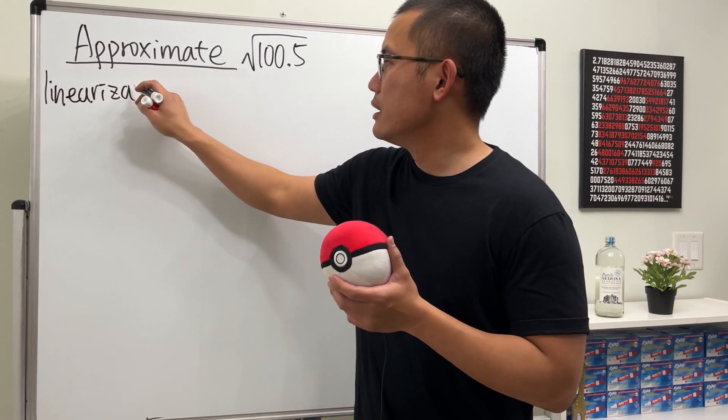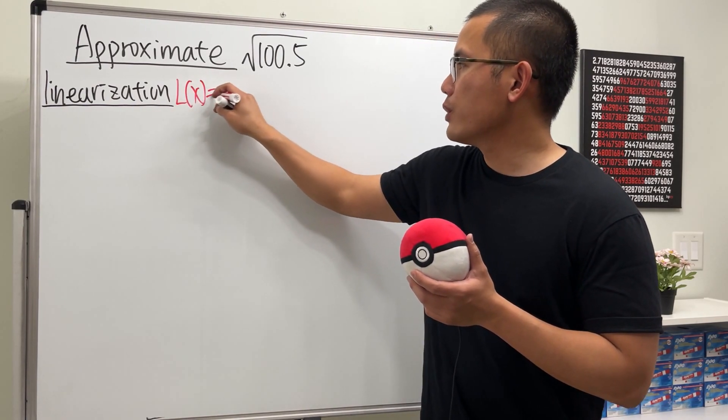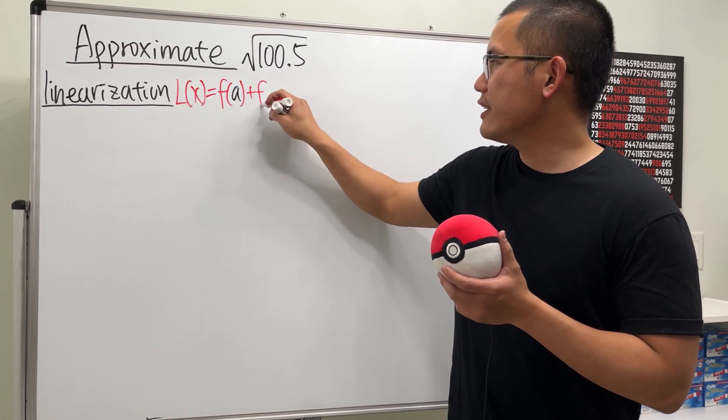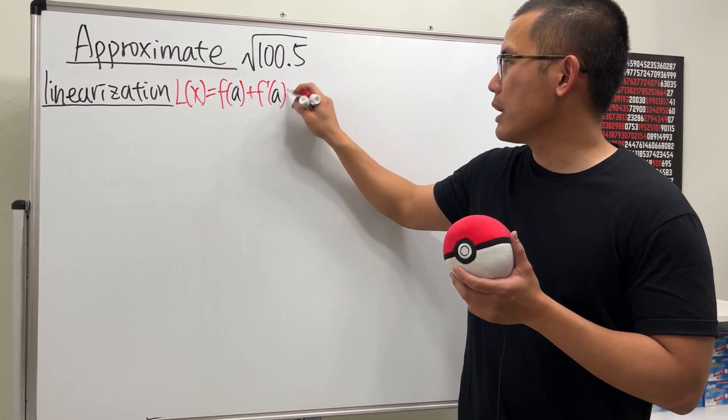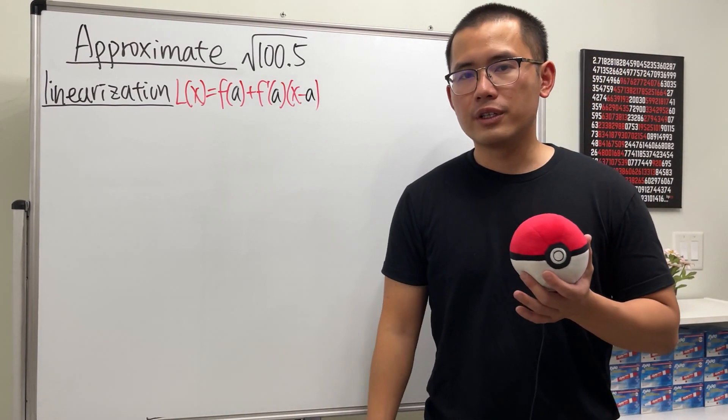And again, this right here is just the equation of the tangent line. And I'll write down this for you guys. L of x is equal to the value of the function at the a value, and then we add f prime of a, and then we multiply by x minus a.